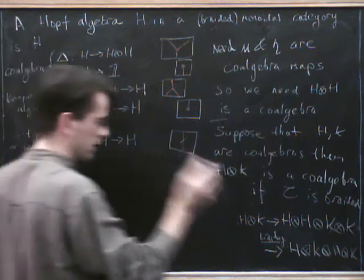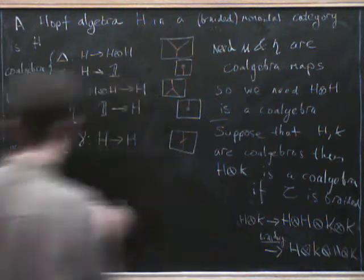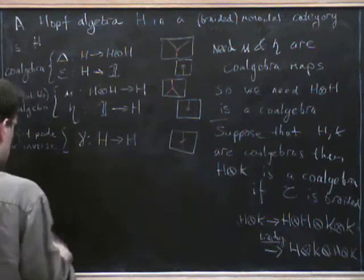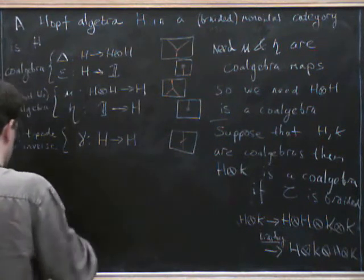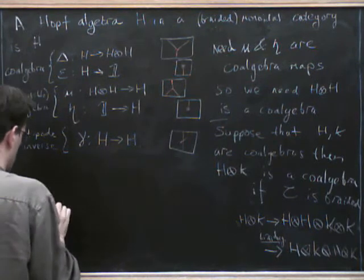So I should show you how to do that string diagrammatically first. I'll try and do this with two colors. So we had H, we start with H and, well no, H is red, isn't it? So we start with H in red and K in white.